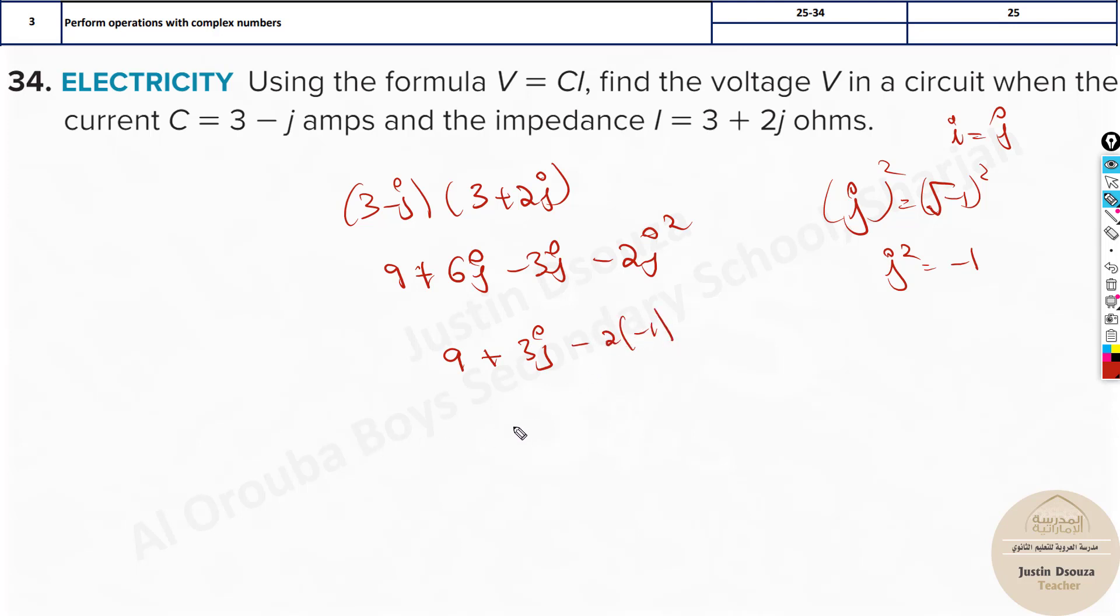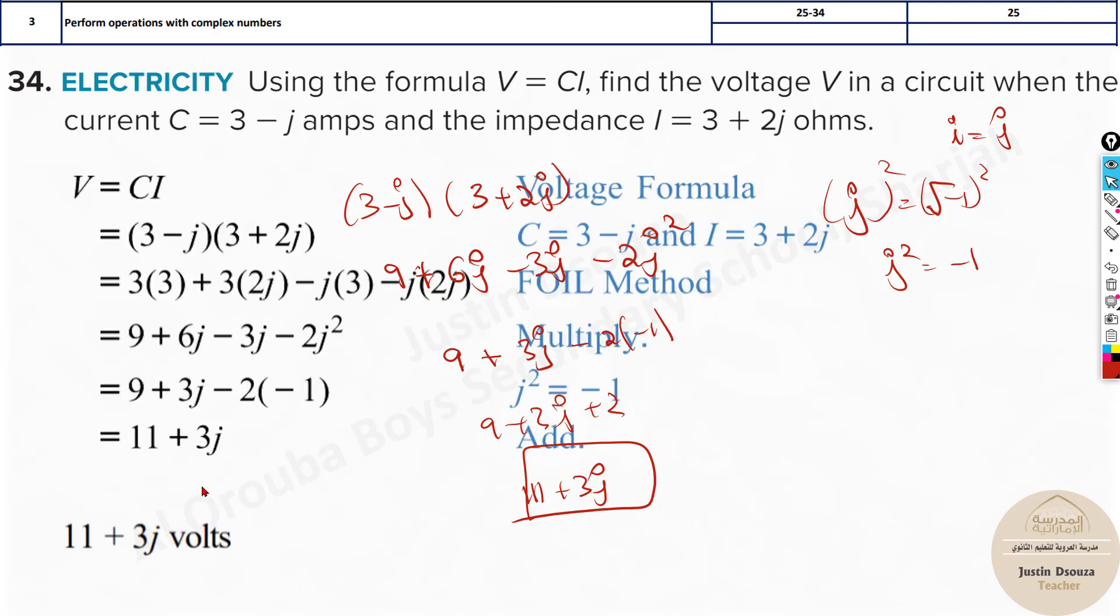So this will become plus 2. 9 plus 3i plus 2, add them up together, it will be 11 plus 3i. This will be the final answer. Let's check: 11 plus 3i. Now since it's voltage, it must be written as 11 plus 3i volts.